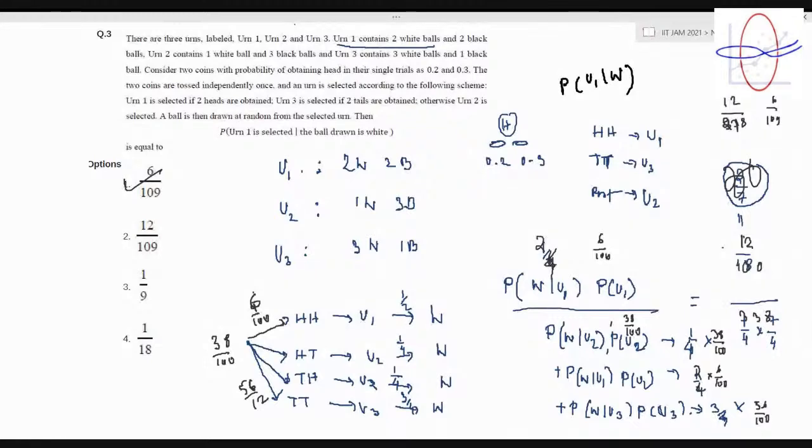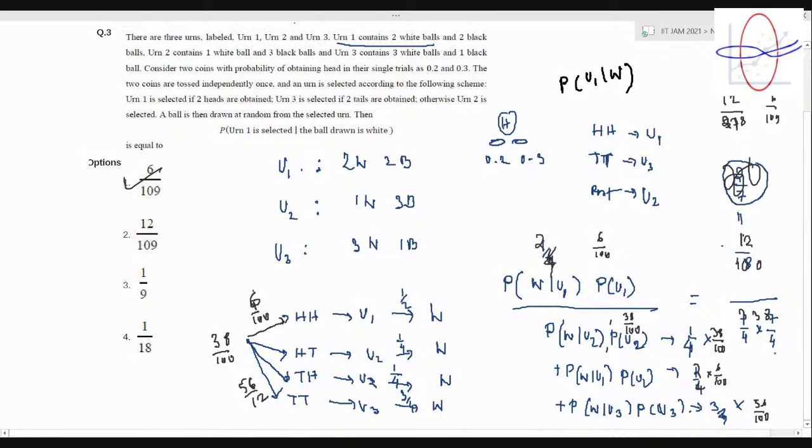So we have used Bayes theorem over here to observe that probability W given U1 into probability of U1 by probability of W. And we know W given U1 is what. So this is a tree diagram you must draw first. W given U1 is half. Given U2, W is one fourth. Actually it's half again because of the two cases. And given U3, W is three by four.